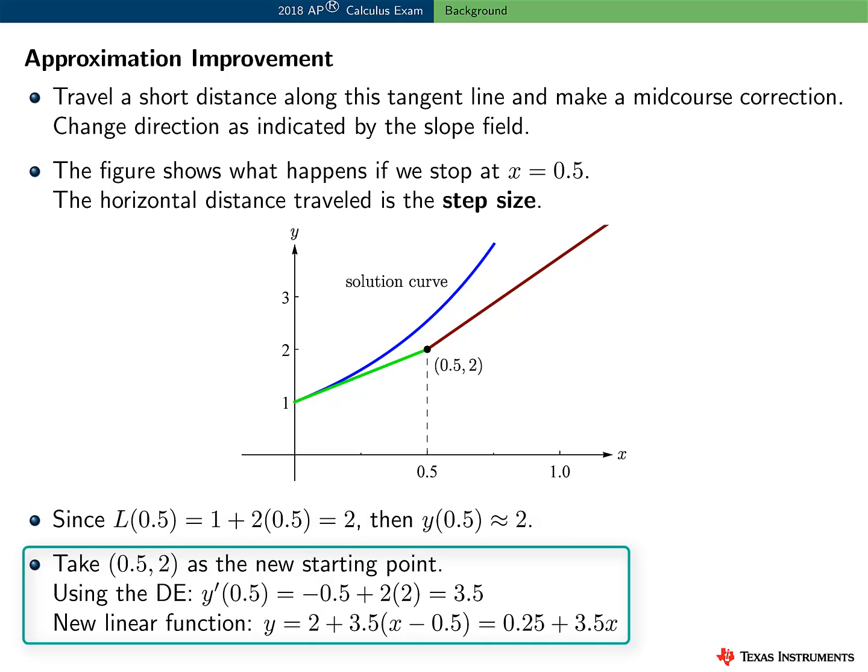Let's take (0.5, 2) as the starting point for a new line segment, that is, a new tangent line. Using the differential equation, the slope of the new line is 3.5. And then use the new linear function here, 0.25 plus 3.5x. Use this as an approximation to the solution for x greater than 0.5. This is the maroon segment in the figure.